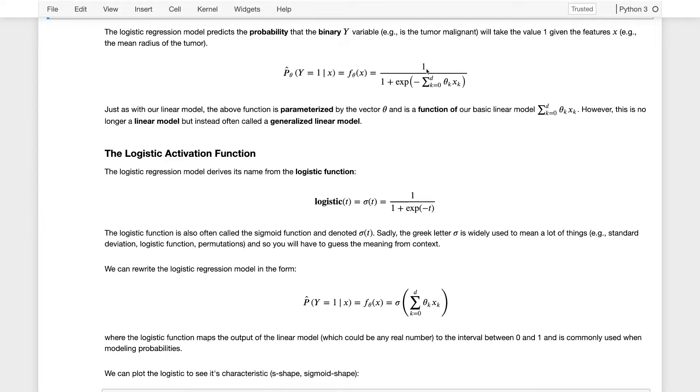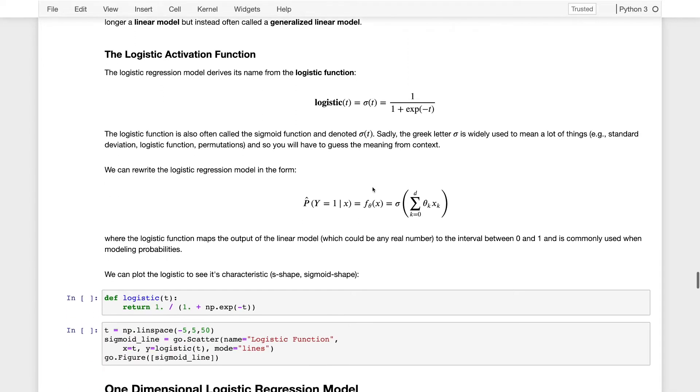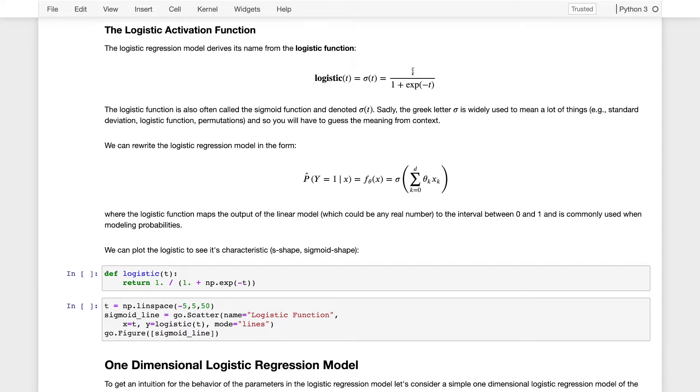This function 1 over 1 plus the exponent of a negative linear combination, or of a negative t, is actually called the logistic function. It takes the following form: the logistic function is 1 over 1 plus the exponent of negative t. It's often denoted as sigma of t, which is particularly confusing in a class where sigma also stands for standard deviation. It's sort of a virtue of the fact that this function looks like an s or a sigmoid, and so sigma is the natural Greek letter for that.